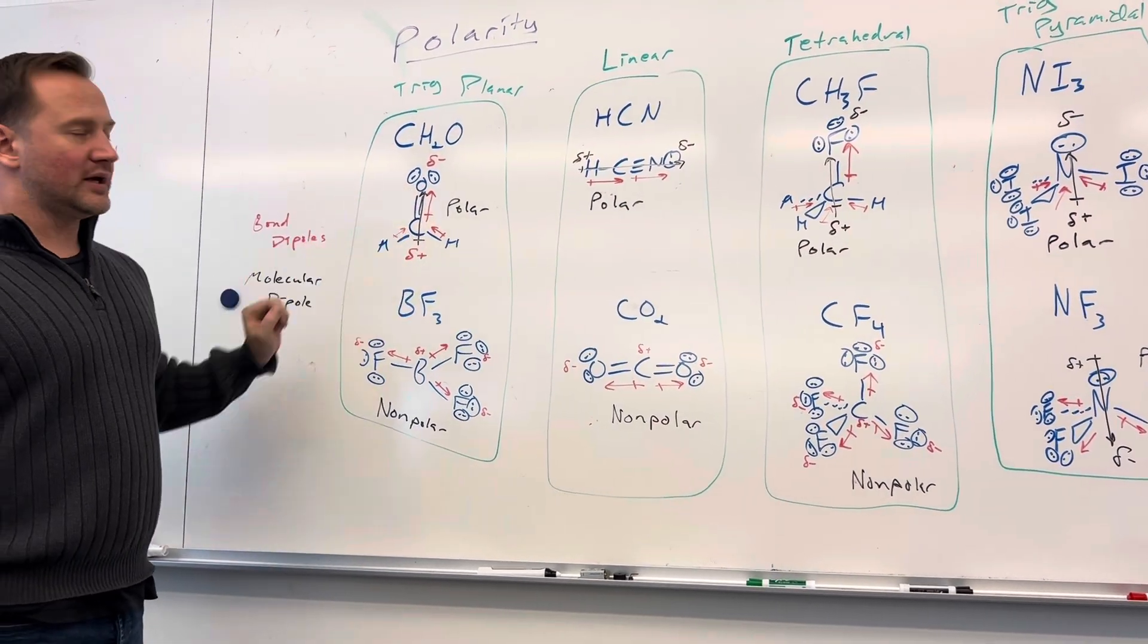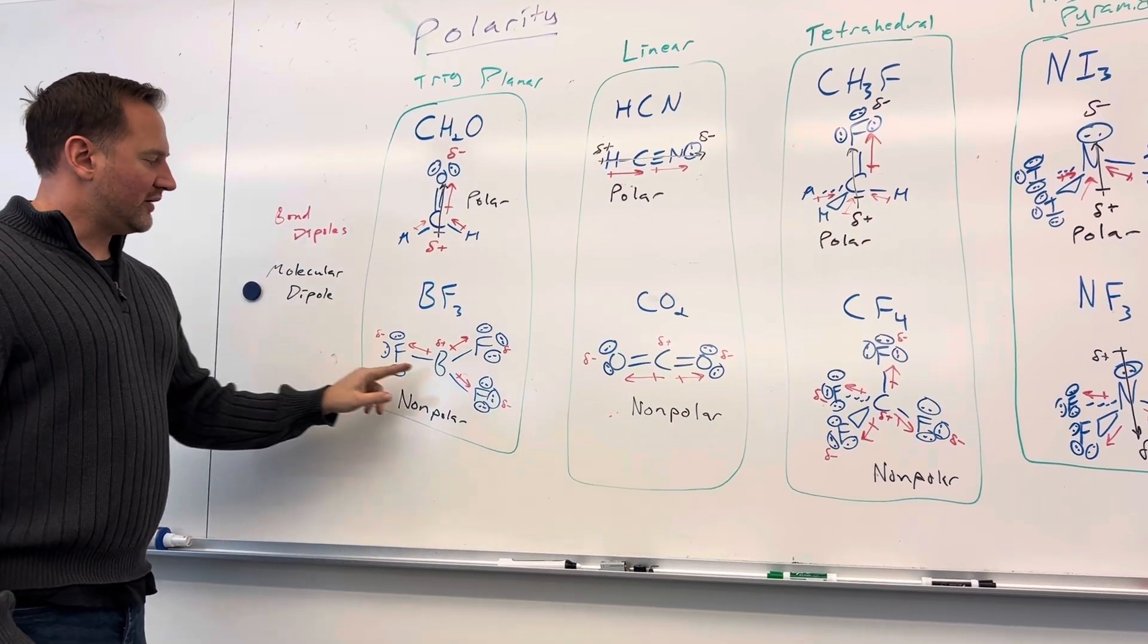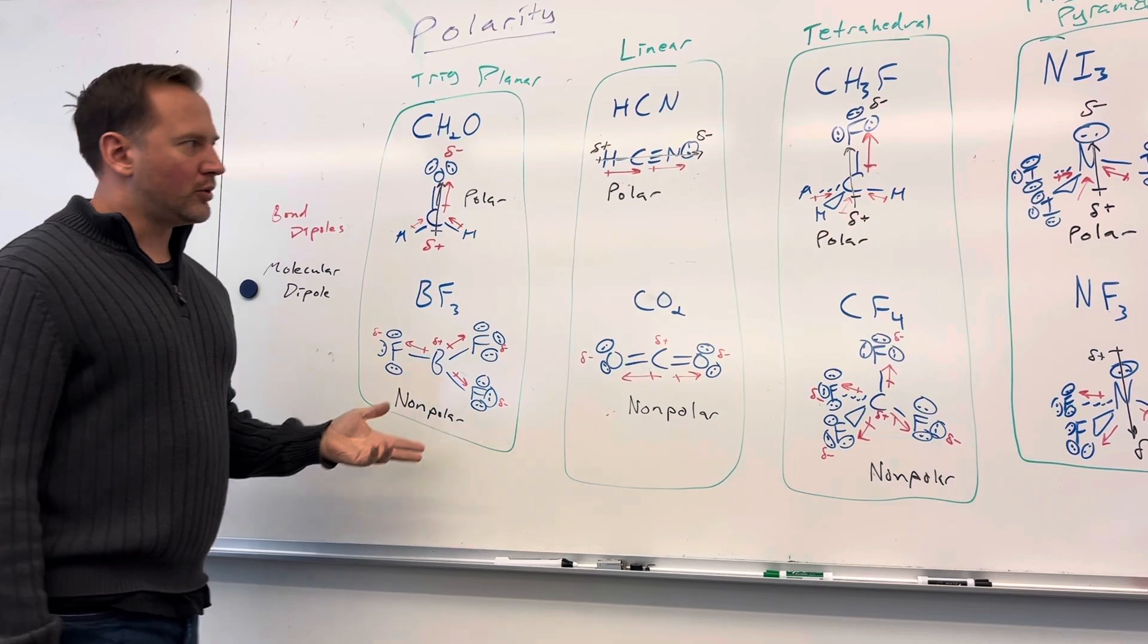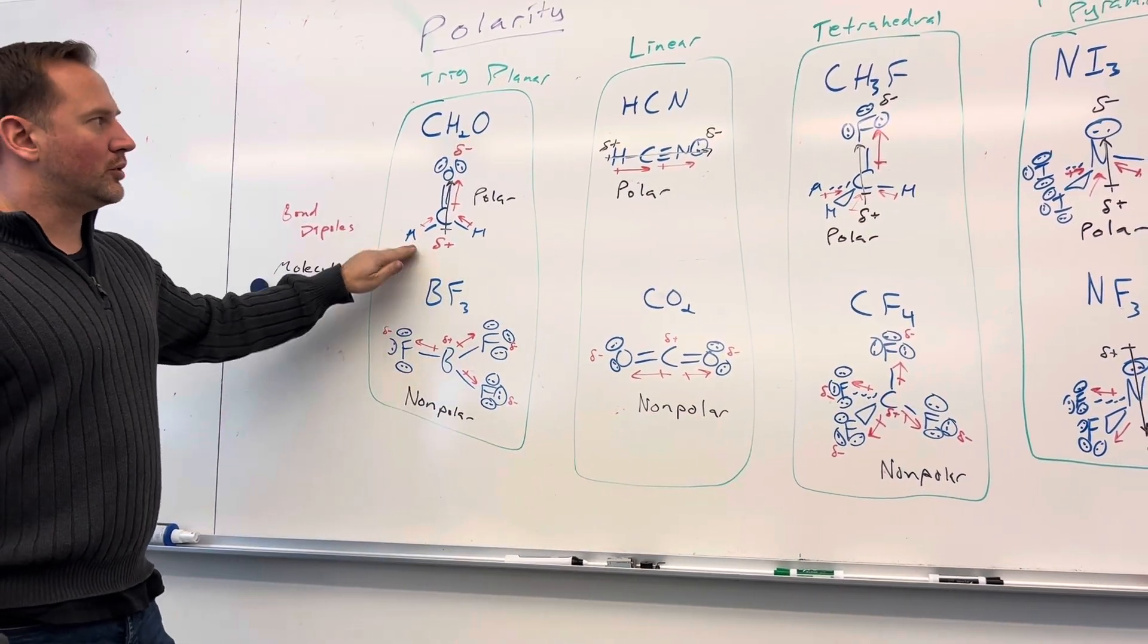If you have different elements bonded to the central atom, or multiple elements bonded to the central atom, it can be polar. But if you have identical elements bonded to the central atom, then it's going to be non-polar. So symmetrical, non-polar; asymmetrical, polar.